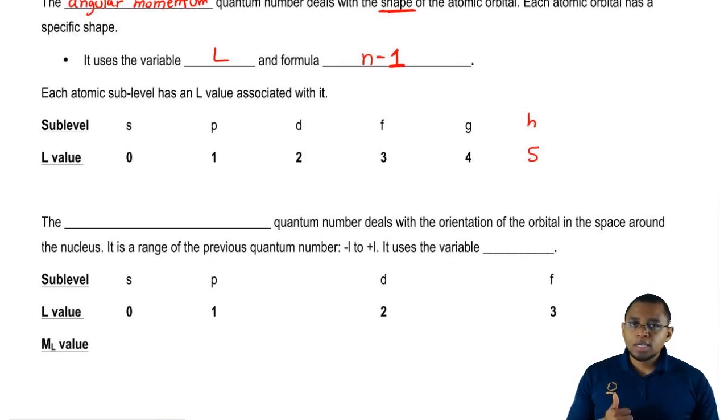Each of them, if you know the sublevel letter, then you know what the L value is. If we don't know the sublevel letter, that's when we use this formula, n minus 1. We'll see how that works when we put to practice calculating things dealing with the quantum numbers.